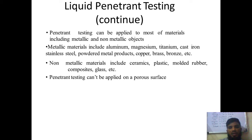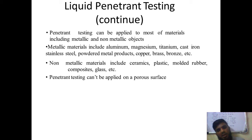The metallic materials that can be studied include aluminum, magnesium, titanium, cast and stainless steel, powder metallurgy materials, copper, and bronze. Non-metallic materials like ceramics, plastics, rubbers, and composite materials can also be studied using liquid penetrant testing.